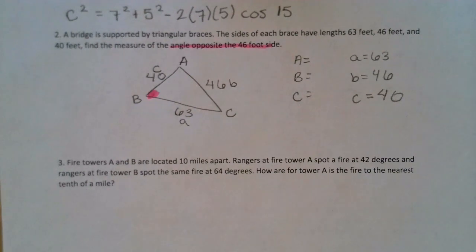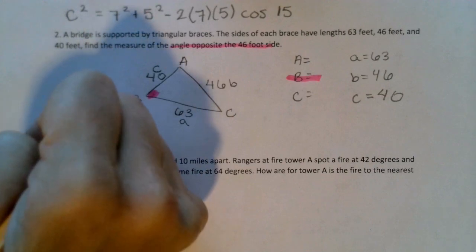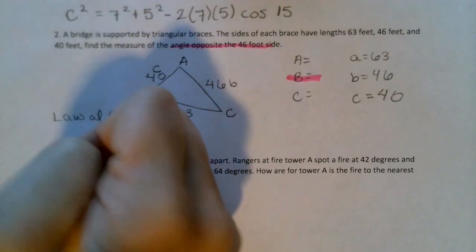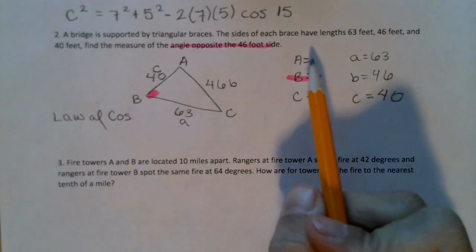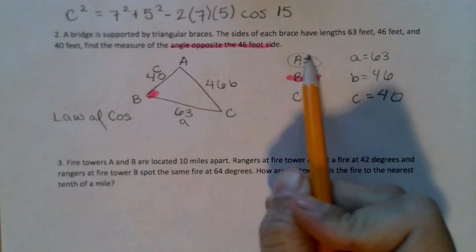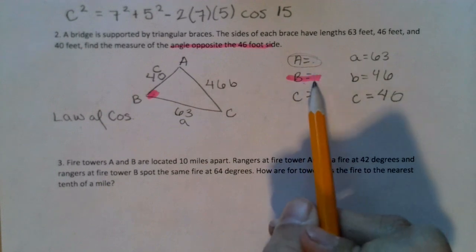Little b is 46. And little c is 40. And we are trying to find angle B. So we have side, side, side. Hopefully, this is telling you to start with Law of Cosines. But, if you remember, Law of Cosines with side, side, side, tells you you have to solve for which side first? Yes, the longest side. If we look at the longest side, the angle right here is angle A. But we want angle B. So we're going to have to solve for A before we solve for B.